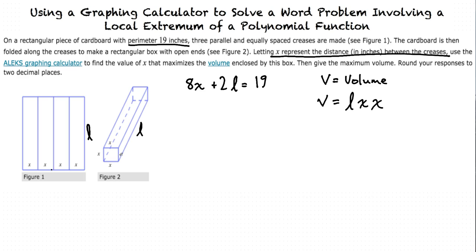Could we use the other equation to make a substitution? That is exactly what we do. We have to first solve the other equation for l, and then we will plug that into l in the volume equation. So in order to solve this equation for l, we can subtract 8x on both sides to get 2l equal to 19 minus 8x. Then divide by 2 on both sides, and we get l equals 9.5 minus 4x.